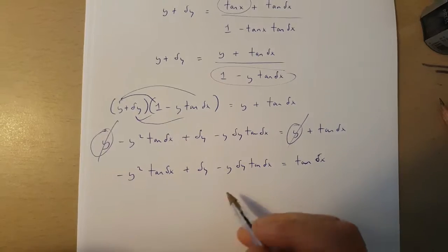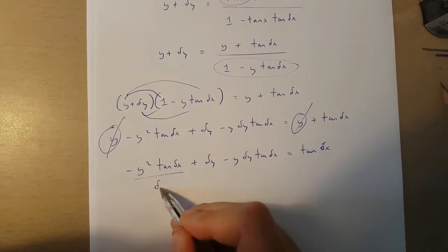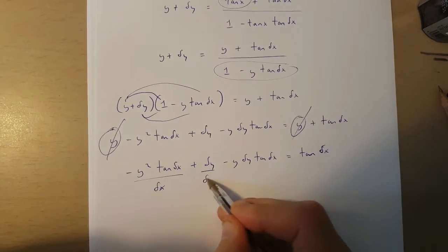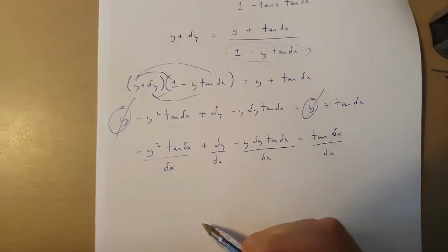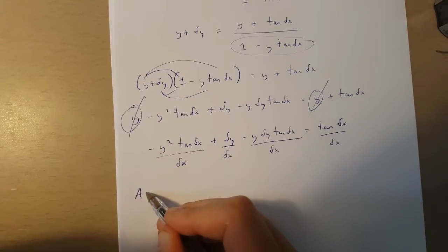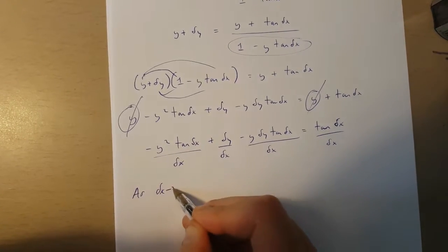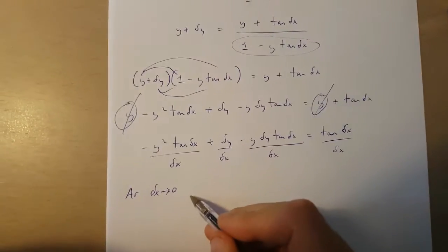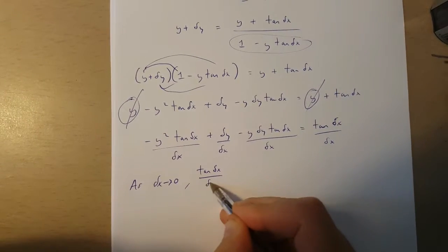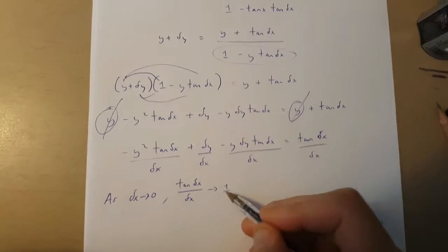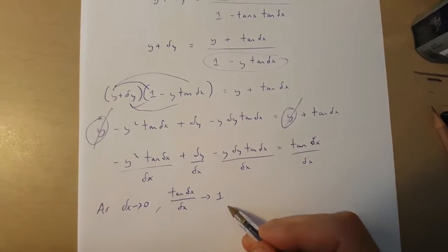Now we're going to divide each and every element of this equation by change in x. And it turns out as change in x approaches 0, tan change in x over change in x approaches 1. You can check this out on your calculator.